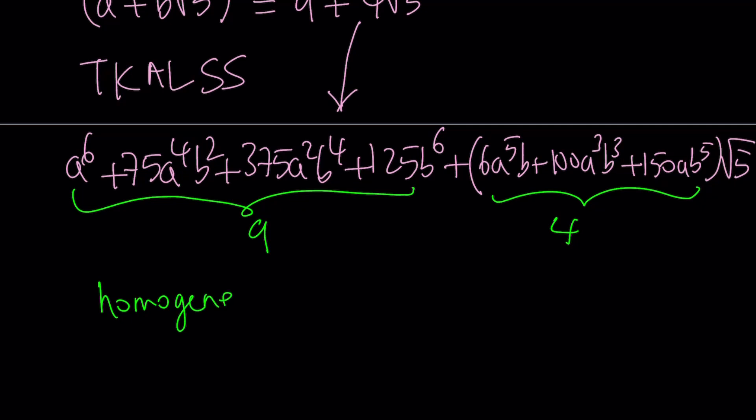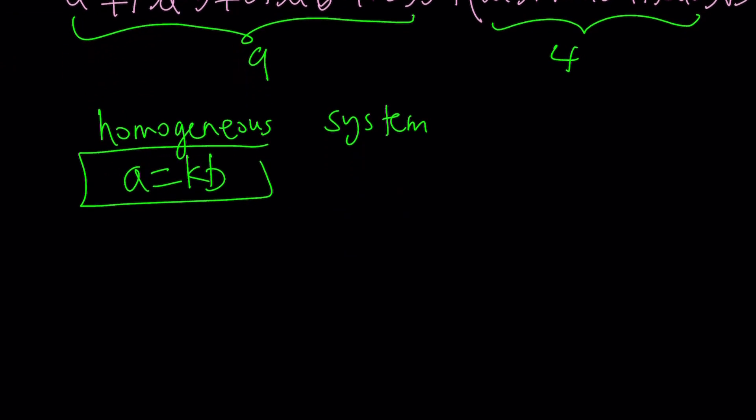To keep a long story short, we're going to solve this as a system and find the a and b values. Since this is a homogeneous system, a equals kb will do the trick. If you go ahead and replace a with kb, you're going to get two equations, and then factor out the b to the fourth power, divide both equations, it's going to cancel out. To save you some time and trouble, I did it for you, and I got a equals 1 half, and b equals 1 half.